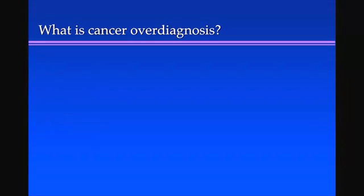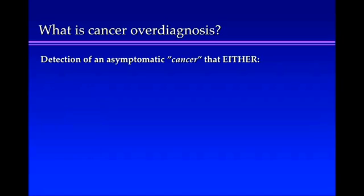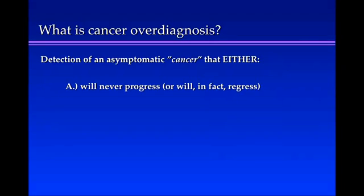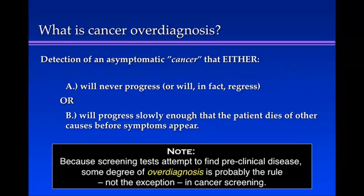Before we can talk about over-diagnosis bias, we need to talk about over-diagnosis. Over-diagnosis is best understood in cancer, so we'll focus on cancer over-diagnosis. What is it? It's the detection of an asymptomatic cancer that either A) will never progress, or in fact will regress, or B) will progress slowly enough that the patient dies of other causes before symptoms appear. The important concept is this is a patient with a cancer that is never destined to bother them. Because screening tests attempt to find preclinical disease, some degree of over-diagnosis is probably the rule, not the exception, in cancer screening.